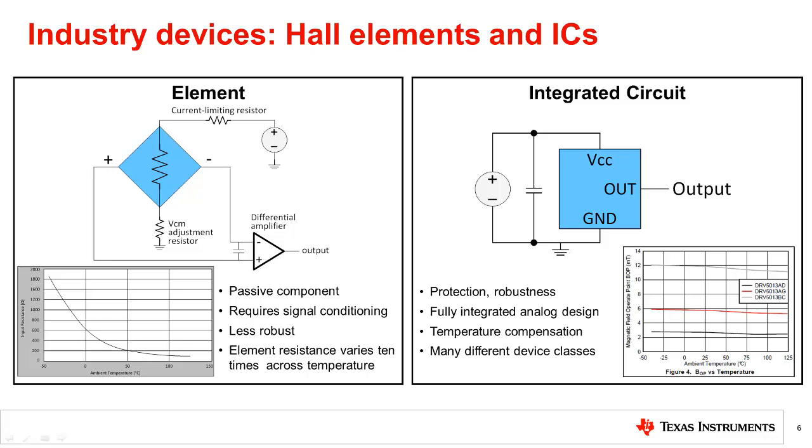The two main classes of Hall effect devices are discrete elements and integrated circuits or ICs. Starting with discrete elements shown on the left, these must be biased with a certain amount of current. The equivalent circuit is basically a resistor and a differential voltage forms on the other two terminals when a magnetic field is present. The main benefit of discrete elements is their low cost, but they also require external signal conditioning. Their characteristics also change a great deal over temperature and elements are easy to damage.